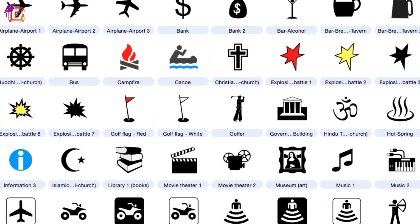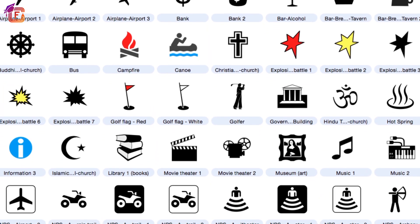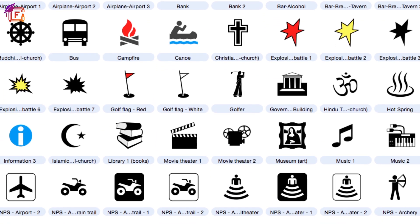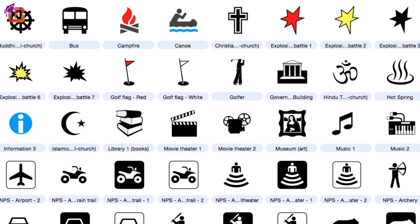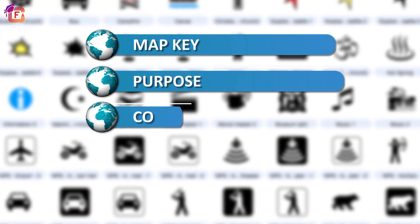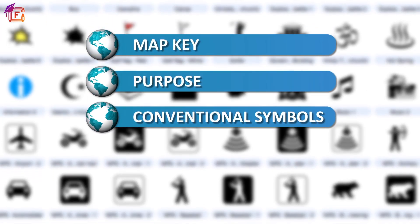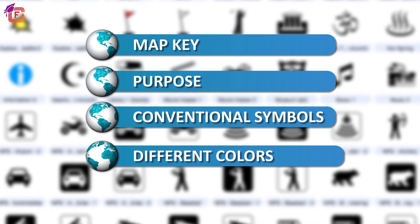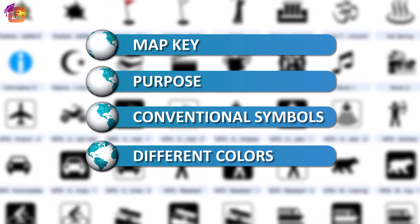In this video, we are going to know what are the symbols that are used in maps, map key purpose, convention symbols and different colors.